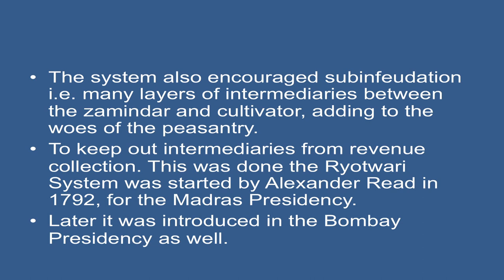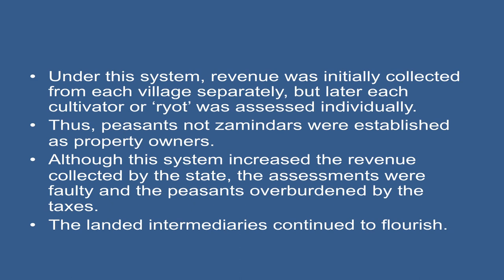To keep out intermediaries from revenue collection, the Ryotwari system was started by Alexander Reed in 1792 for the Madras Residency, and later introduced in the Bombay Presidency as well. Under this system, revenue was initially collected from each village separately, but later each cultivator or rayat was assessed individually. Thus, peasants, not zamindars, were established as property owners, although the system increased the revenue collected by the state. The assessments were faulty and the peasants overburdened by the taxes.